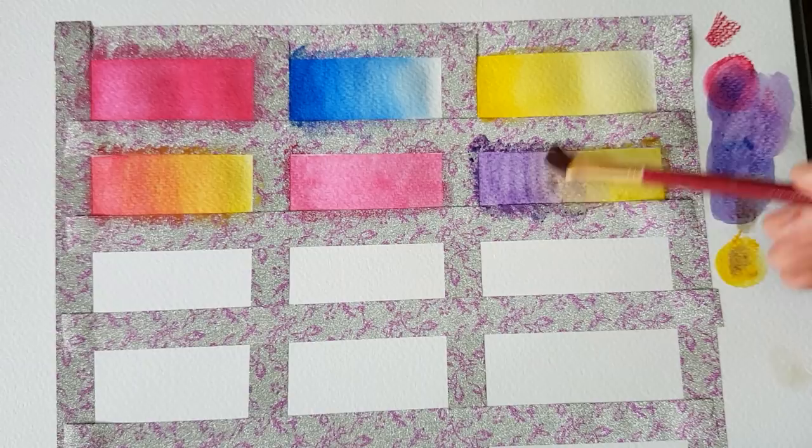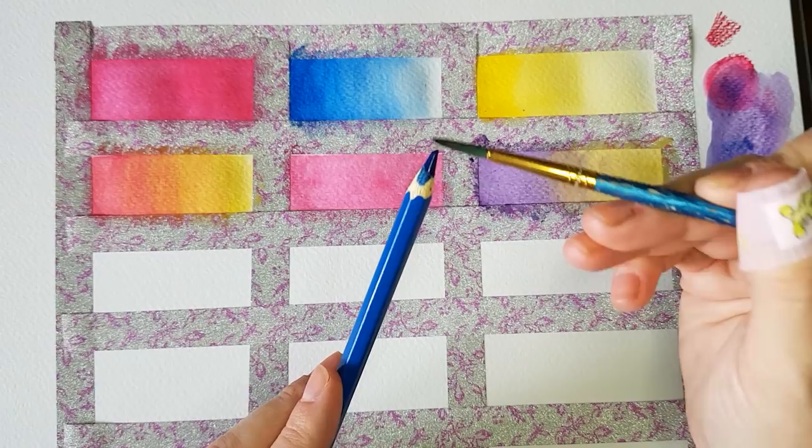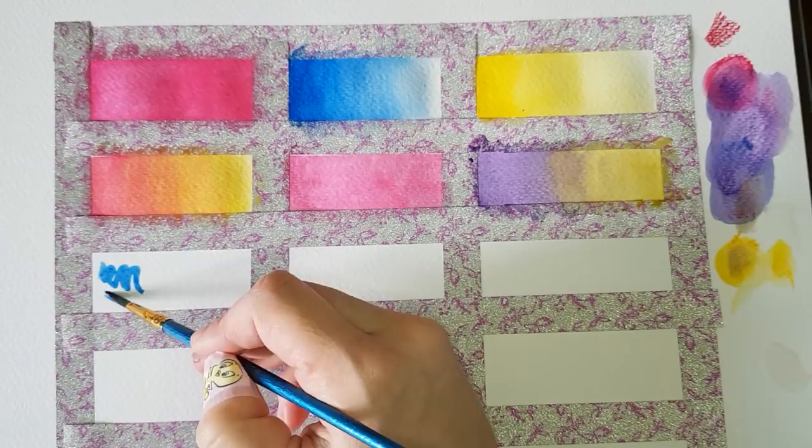For the next technique we will wet the pencil. I take my round brush, dip it into the water and rub against the tip of the pencil. This way I saturate my brush with the pigment and I can paint with it. It's similar to the previous techniques where I lifted the pigment off the paper. The difference being that I lift the pigment directly from the pencil itself.